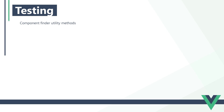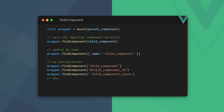The find method should only be used to find elements inside a component. To find the component itself, we should use the getComponent, findComponent, and findAllComponents utility methods. Apart from finding a component, we can use the findComponent method to test if a component contains a child. The method takes the component we want to find as an argument. We have several options: we can pass the imported child directly to the method, use an object with a name property to search for the child by its name, or use JavaScript query selector syntax. If the child component is found, it will return a wrapper for it.